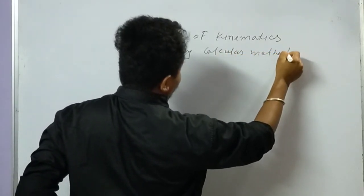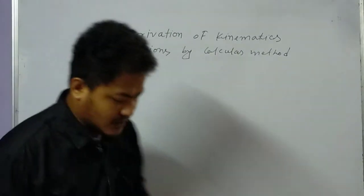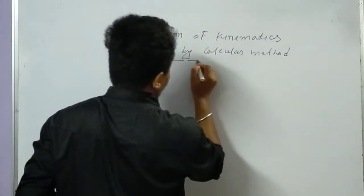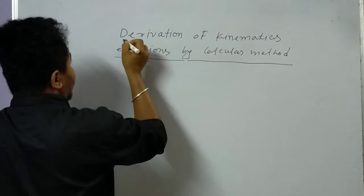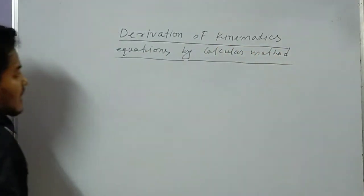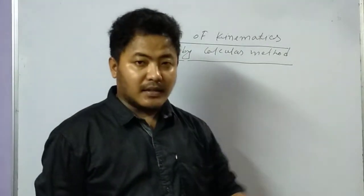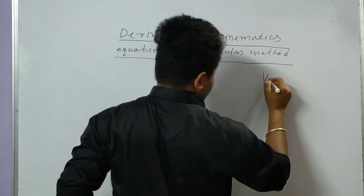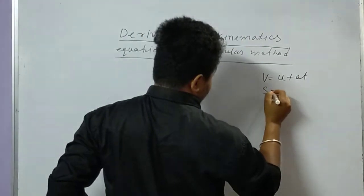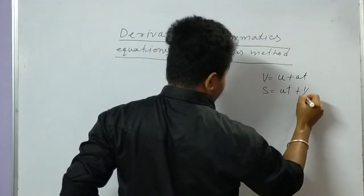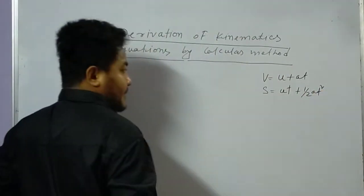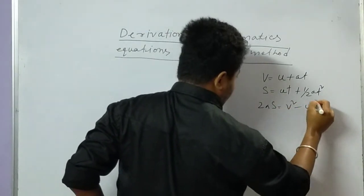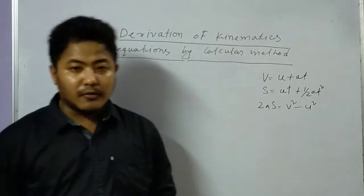Today's topic is: Derivation of Kinematics Equations by Calculus Method. In the previous class we derived these equations graphically, and today we will derive them by calculus method. The three equations are: v = u + at, s = ut + ½at², and v² - u² = 2as. We will derive all three by calculus method today.